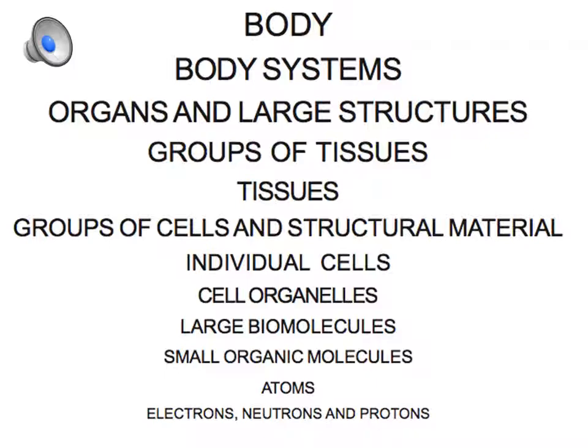But then the organs themselves are made up of groups of tissues and the larger structures are made up of groups of tissues. Now, a tissue is a group of similar cells with associated extracellular material. And that extracellular material is normally synthesized by these particular cells that comprise the tissue.